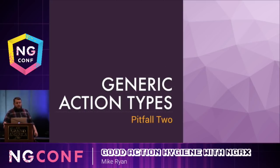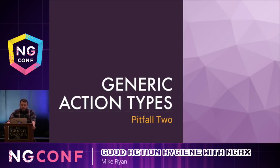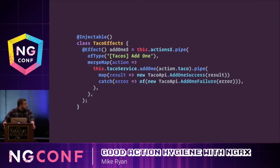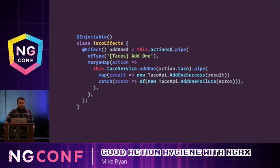The second pitfall is using generic action types, and it turns out this one is pretty related to the first pitfall. If you're avoiding action reuse and capturing unique events, you're probably already avoiding generic action types, but it's still worth discussing. Here I have an effect listening for when the user adds a taco to their cart. From personal experience, when I come back to this effect in a year, I have no idea where this came from. I have to trace where this action was dispatched using my IDE to figure out how this effect got into my system — and that's not helping anybody.